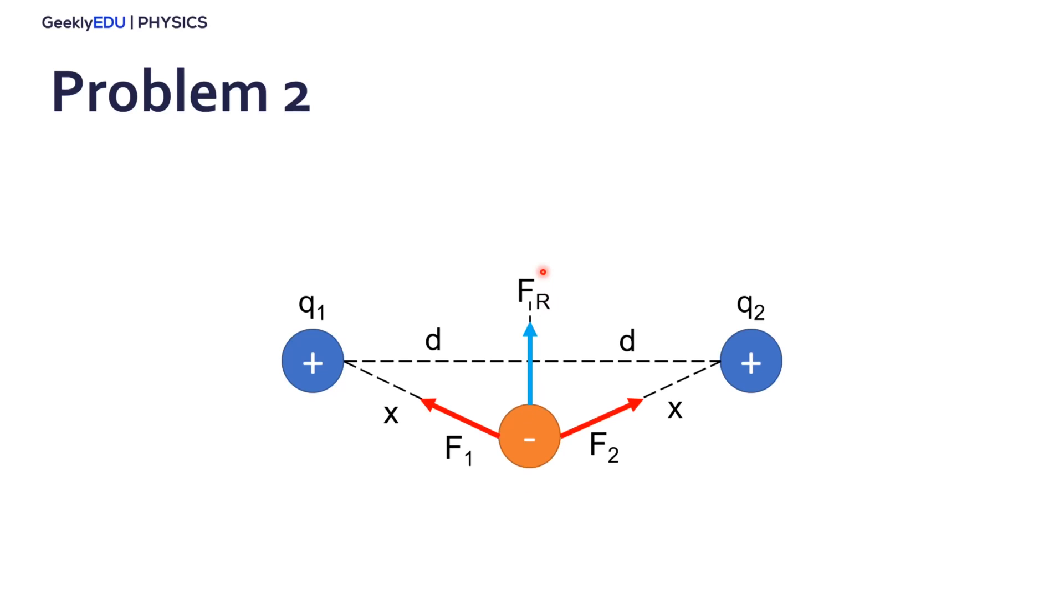So if we move the particle in the y direction, vertically, perpendicular to this segment here, we're actually not unstabilizing the system. So if we move it down, it tends to go back to the middle, if we move it up, it tends to go down and go back to the middle again. So the system is stable.